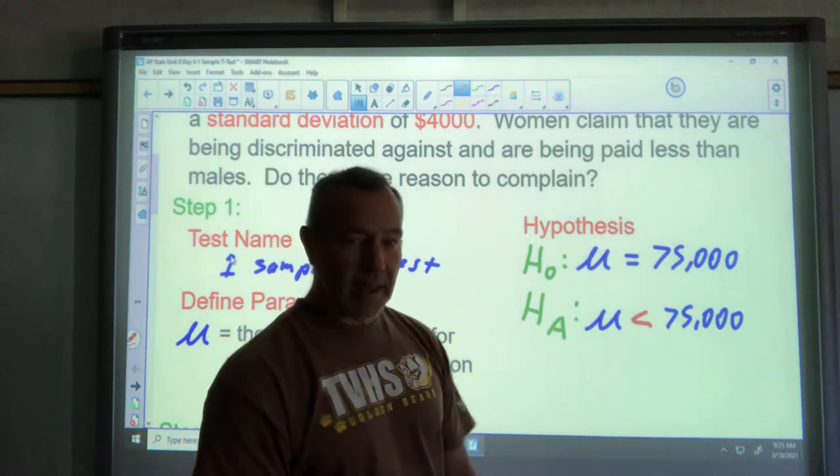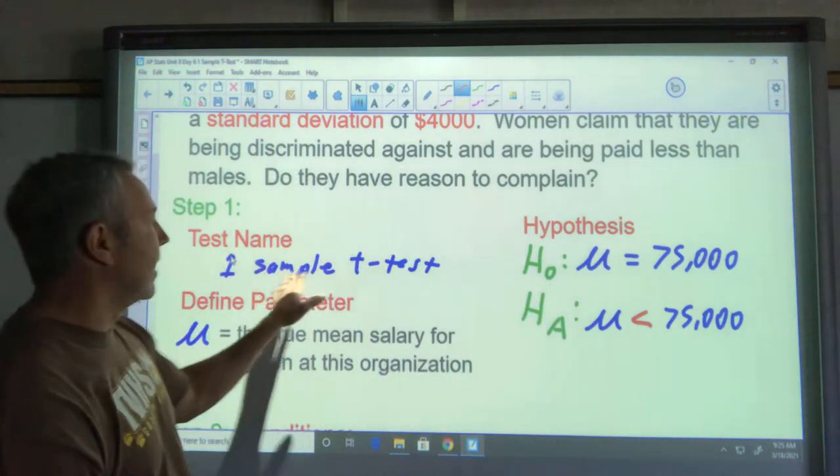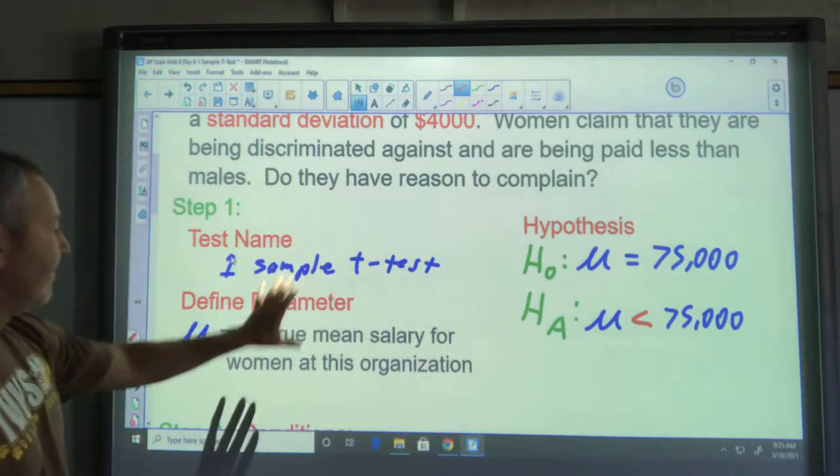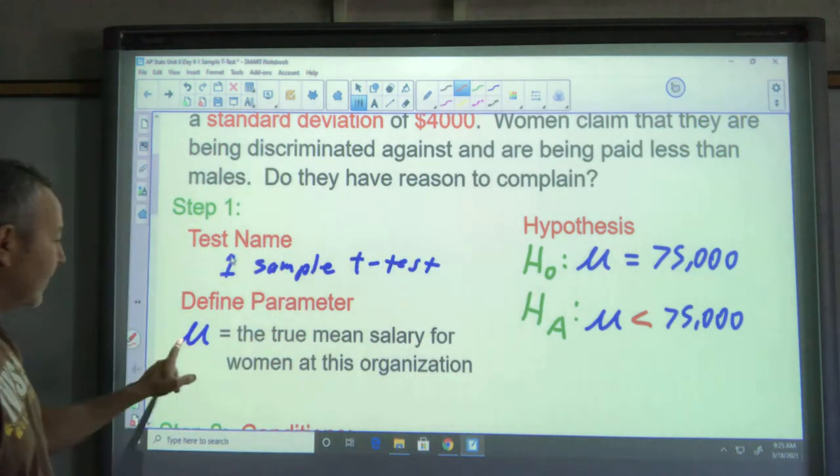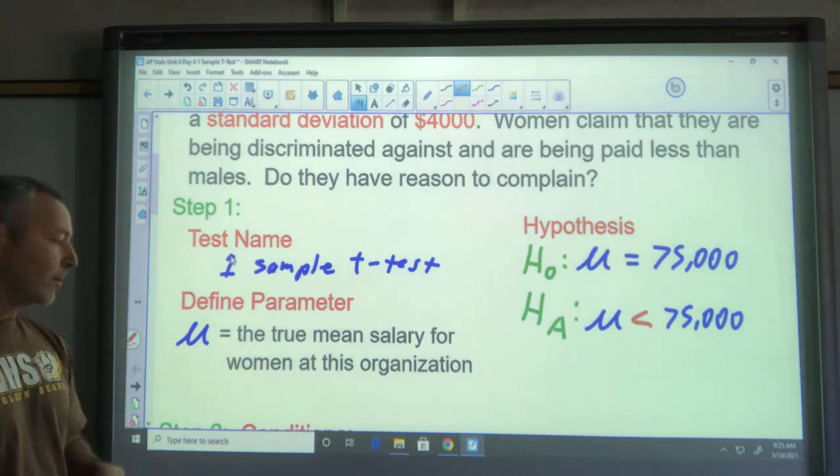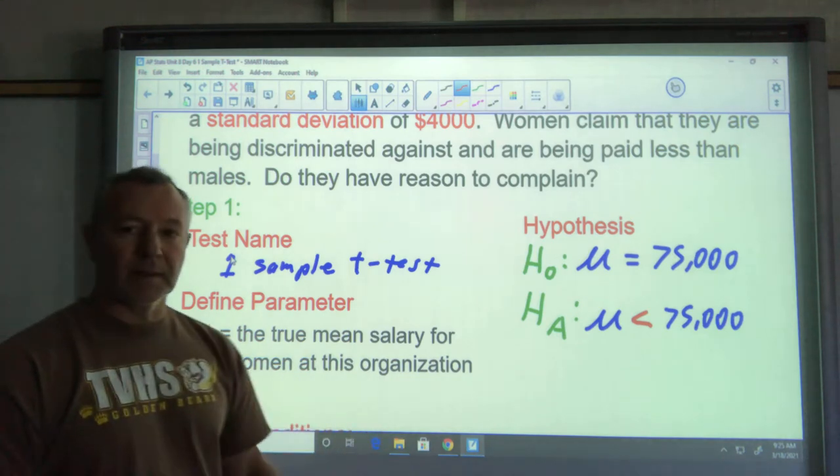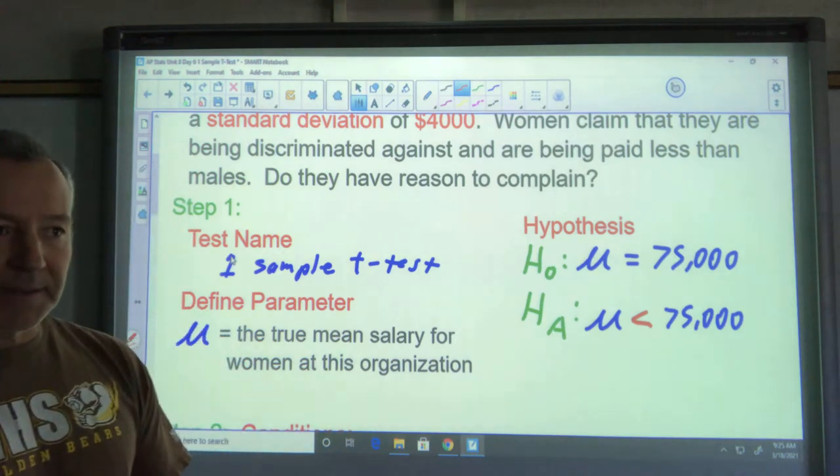As usual in our step one here we have to state the test name, hypotheses, and define the parameter. Our parameter is mu, not x bar. And what we're looking for here is the true mean salary of women, not just of women but women at this organization. Make sure you identify your specific population.